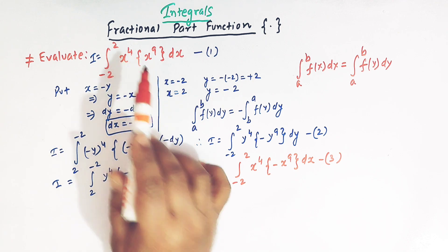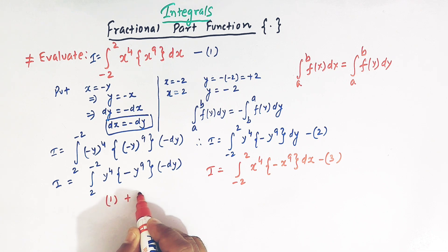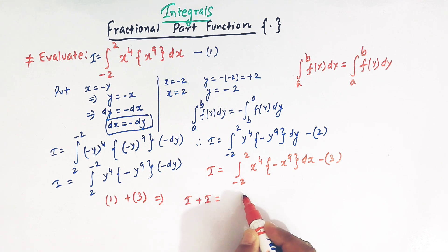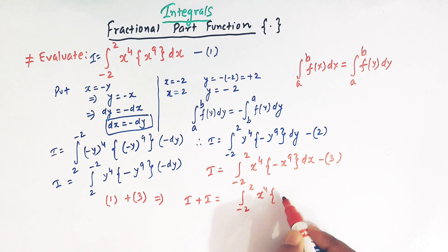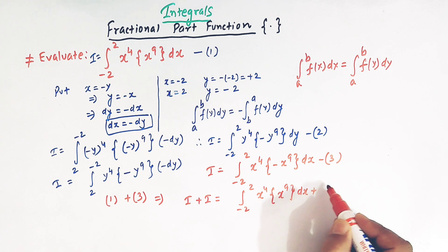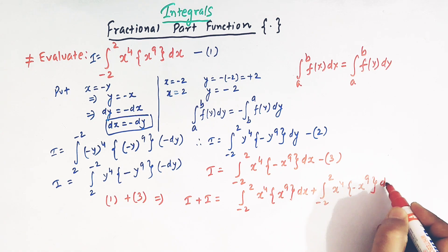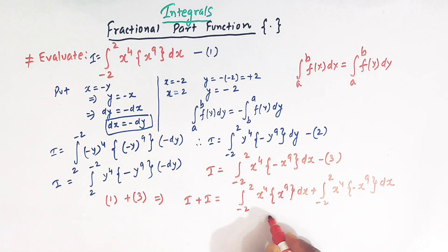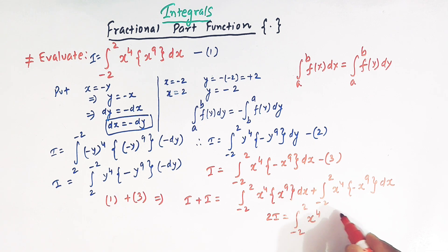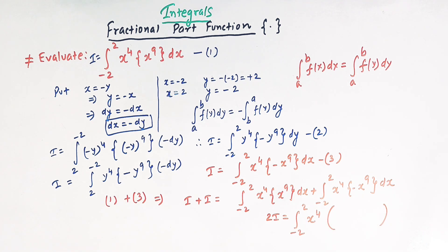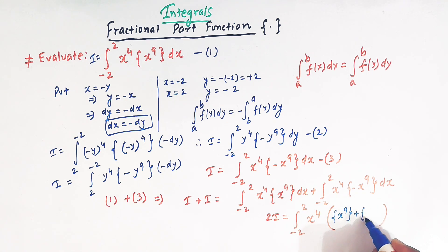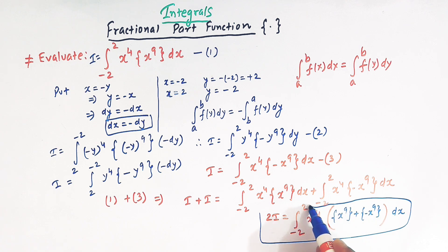So now what we will do — we'll add integral 1 and integral 3. So when we add integral 1 and 3, we'll get I plus I, and here we have the integral from minus 2 to 2 of x raised to 4 times the fractional part of x raised to 9 dx, plus the integral from minus 2 to 2 of x raised to 4 times the fractional part of minus x raised to 9 dx. So now I plus I is simply 2I, and here we can write the integral from minus 2 to 2 of x raised to 4 times the bracket containing the fractional part of x raised to 9 plus the fractional part of minus x raised to 9, dx. So now we have this important expression.